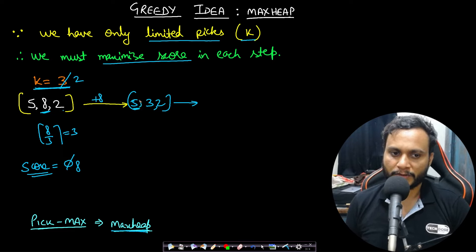When you pick this 5, again this 5 will be reduced to a new number: 5 by 3 ceiling will become 2 and you will be adding 5 to your score. So this becomes 13 and this became [2,3,2].